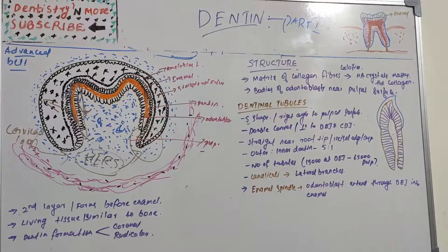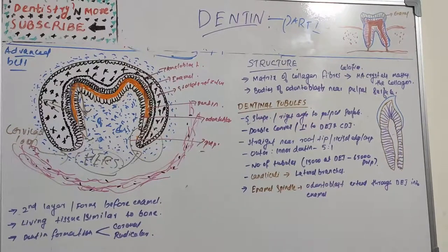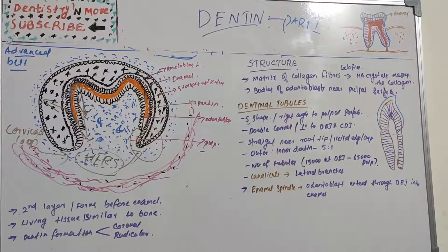Dentine is basically the second layer of tooth, which provides the bulk and general form of the tooth. It begins to form slightly before the enamel and it determines the shape of the crown, including the cusps and ridges, and also the number and size of the roots.